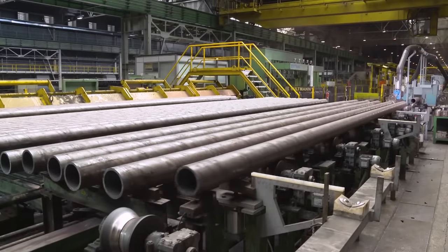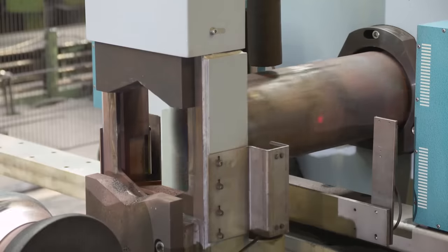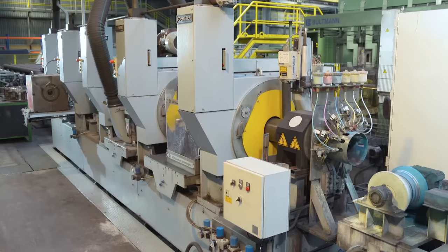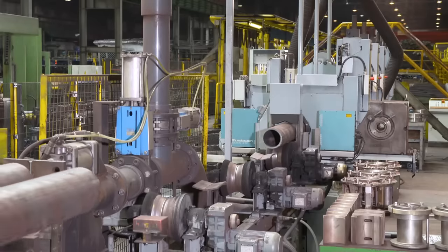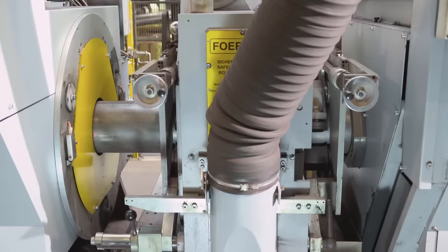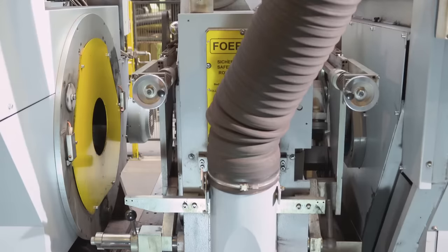Each tube is non-destructively tested. The testing consists of an electromagnetic inspection and the pipe ends are then inspected using ultraviolet magnetic particles. During the electromagnetic inspection, the wall thickness is measured by phased array ultrasonic methods.